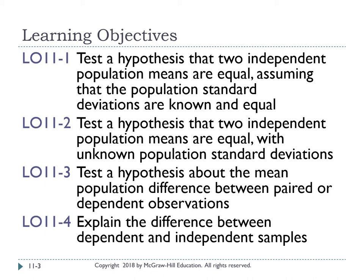There are four learning objectives in this chapter. First, you should be able to test a hypothesis that two independent population means are equal, assuming population standard deviations are known as well as unknown. Second, you should be able to test a hypothesis about the population difference between paired or dependent observations. Last, you should be able to explain the difference between dependent and independent sample tests.